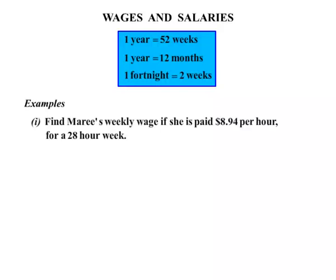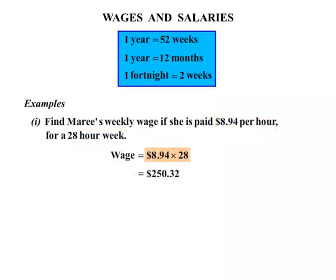Let's look at some examples. The first one: we need to find Marie's weekly wage if she is paid $8.94 per hour for a 28-hour week. She's getting $8.94 per hour and she's working for 28 hours, so we simply multiply 8.94 times 28. We calculate and get $250.32.